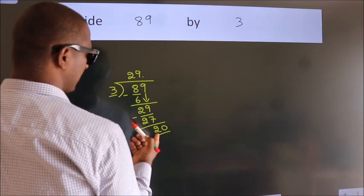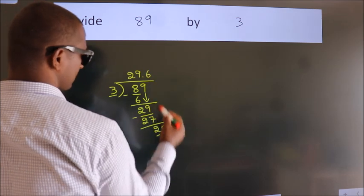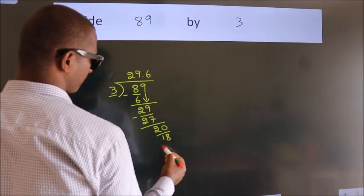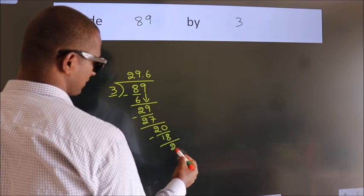A number close to 20 in the 3 table is 3 times 6, 18. Now, we subtract, we get 2.